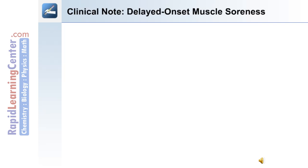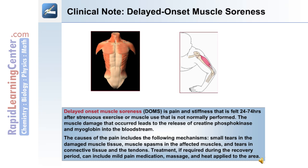A clinical note on the consequences of extreme exercise: delayed onset muscle soreness. DOMS is a pain and stiffness felt between 24 and 74 hours after strenuous or unaccustomed exercise. The muscle damage leads to the release of creatine phosphokinase and myoglobin into the bloodstream. Causes of pain include small tears in the damaged muscle tissue, muscle spasms in the affected muscles, and tears in connective tissue and tendons. Treatment, if required, can include mild pain medication, massage, and heat applied to the area.